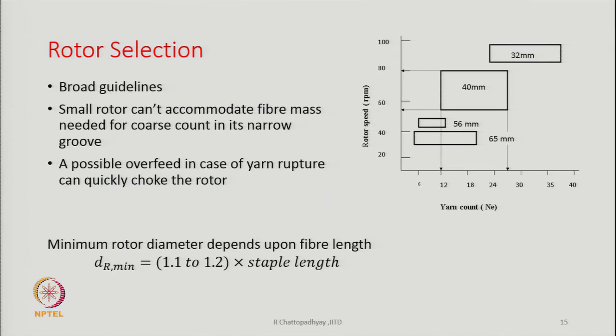On the maximum side, for a 30 mm staple length we can go for 45 mm, 40 mm, or even 56 mm rotor. On the higher side, the restriction is not there in this equation. But from the lower side the restriction states this is the minimum that you should have, which is a function of the staple length of the yarn.